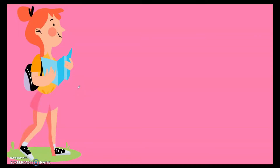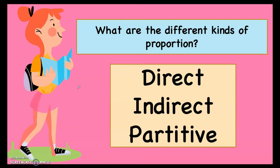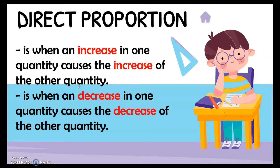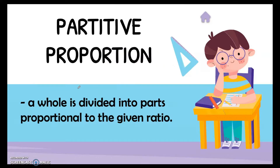Good day everyone. Today we will be applying what we have learned from the previous videos about the different kinds of proportion. Let's recall first: we have direct, indirect, and partitive proportion. Direct is when an increase in one quantity causes the increase of the other, and a decrease causes a decrease. Indirect is when an increase in one quantity causes a decrease in the other. Partitive is when a whole is divided into parts proportional to a given ratio.